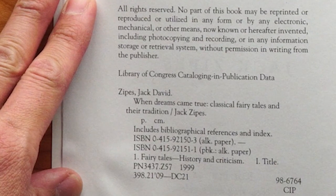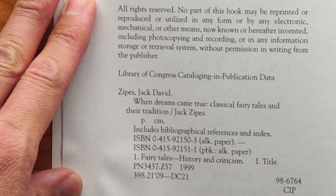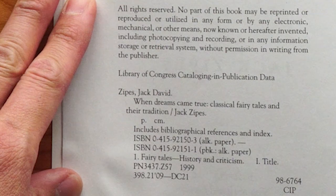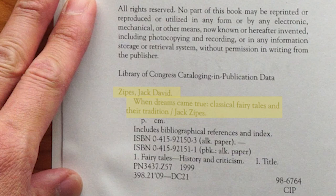Finally, the title and author or editor will usually be on the cover or spine of a book, as well as on the title page. When in doubt, you can find both the book author or editor and the book title on the copyright page.